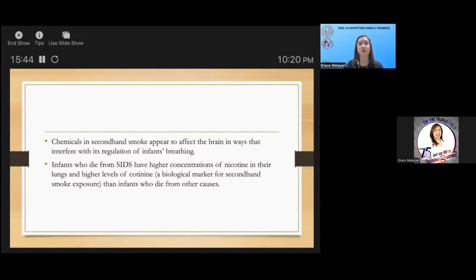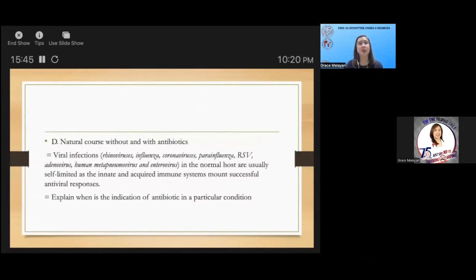We should also discuss the natural course of disease with or without the use of an antibiotic. We should explain that viral infections in the normal host are usually self-limited as the innate and acquired immune systems mount successful antiviral responses. Explain when is the indication of an antibiotic in a particular condition.